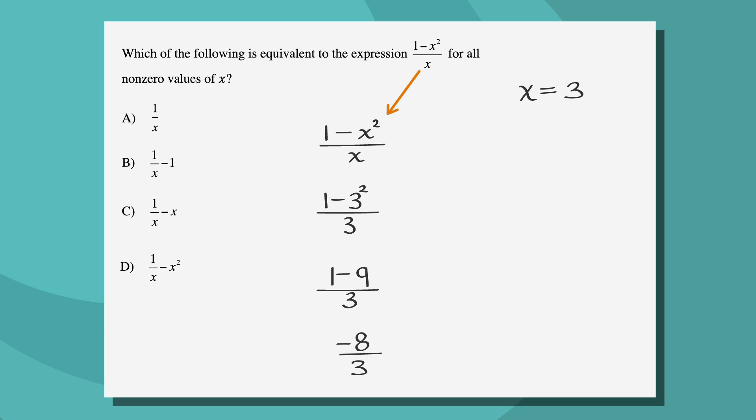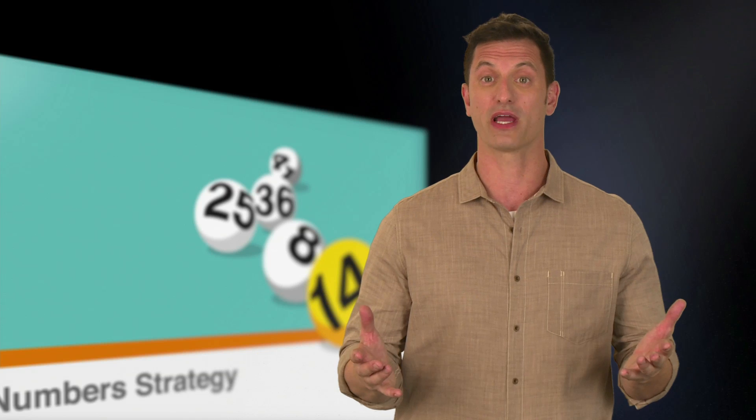Let's label the answer choices as negative 8 over 3, since that's what we're looking for as we plug into the answer choices. Our next step is to plug in x equals 3 into our answer choices. We're looking for an answer that matches the one we just found, negative 8 thirds.